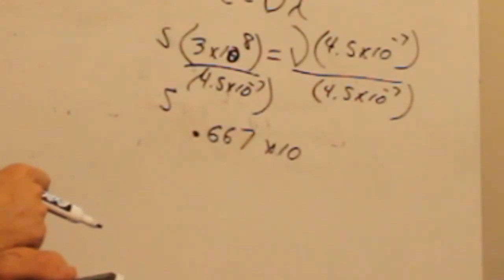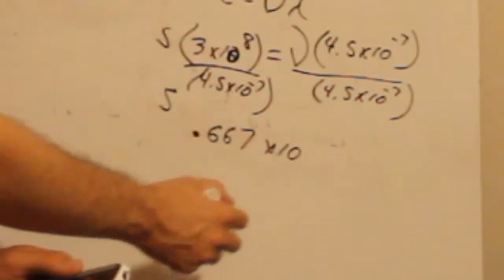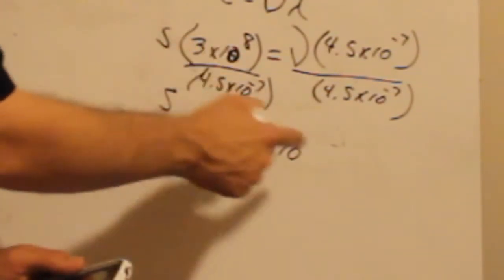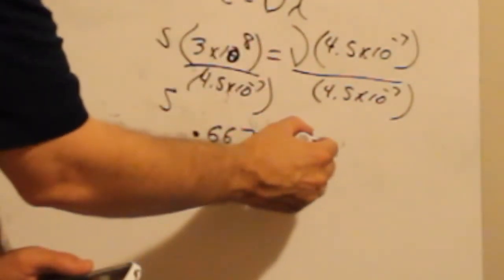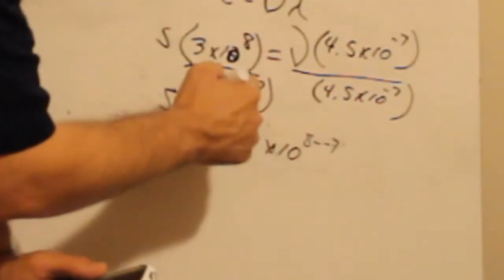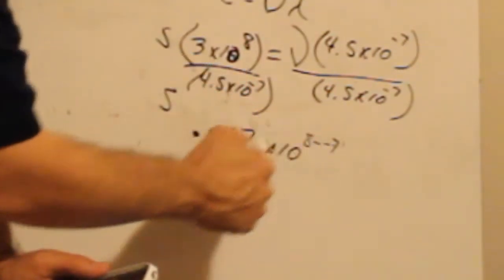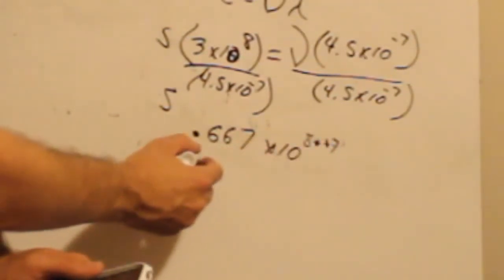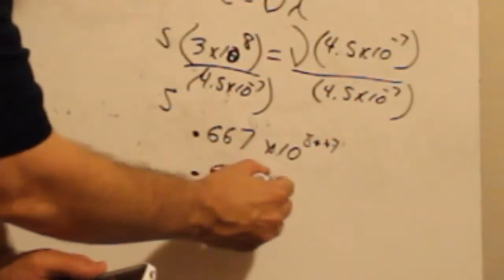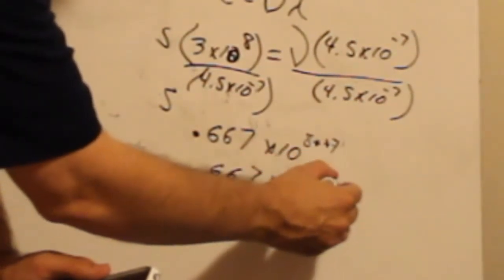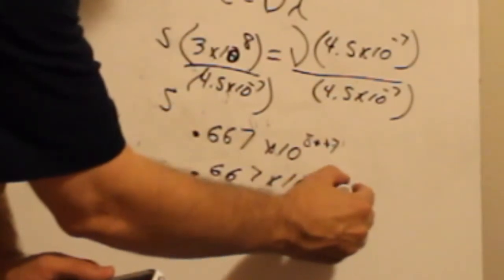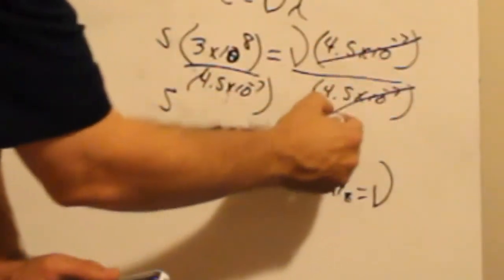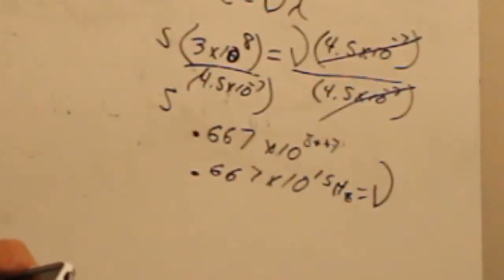But, we're going to use our exponent rules. Our exponent rules that we learned is - what are we doing with our exponents? We're dividing, right? So, if we're dividing, we're going to subtract the exponents. So, I've got eight minus a negative seven. Be careful, that's a negative. So, eight minus negative seven. Minus a negative is the same as plus a positive, right? So, this is point six, six, seven times ten to the fifteenth hertz. Why is it hertz? Because it's a frequency. Because that cancels and that cancels and we have a frequency.